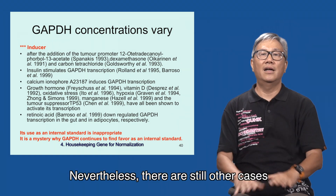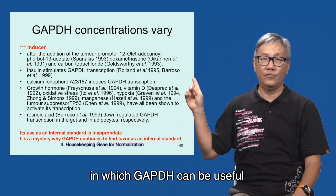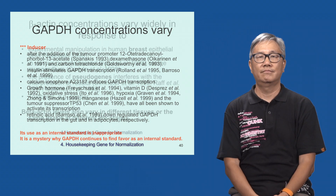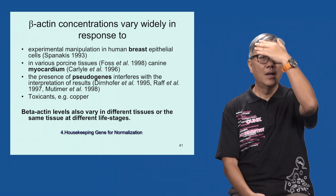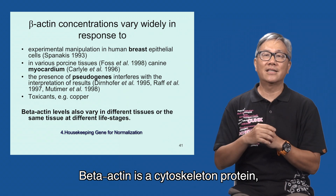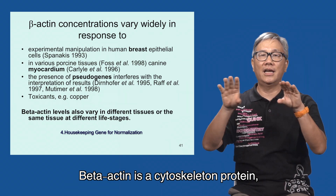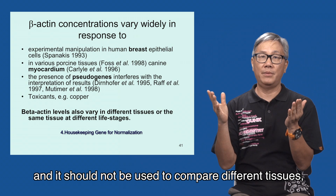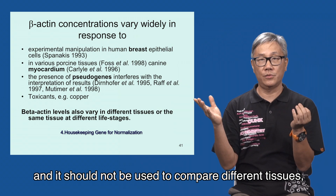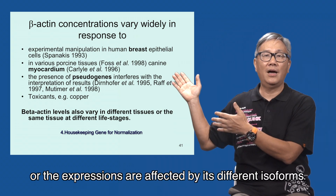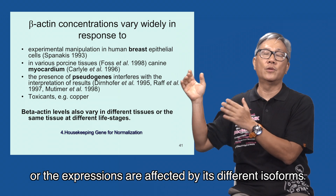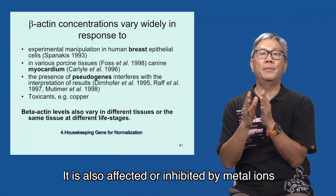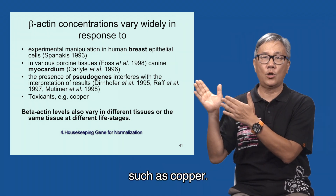Nevertheless, there are still other cases in which GAPDH can be useful. Beta-actin is a cytoskeleton protein and it should not be used to compare different tissues, as all expressions are affected by its different isoforms. It is also inhibited by metal ions such as copper.